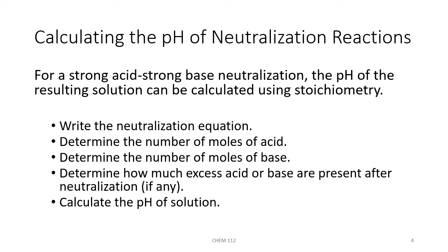In the previous examples, when deciding if the pH after neutralization would be acidic, basic, or neutral, we assumed equal molar amounts of acid and base, so we only had to look at the salt formed. If we don't have equal molar amounts, we can use stoichiometry and the balanced equation to figure out what's left over after neutralization. We write the neutralization equation, determine moles of acid and base reacting, find any excess, and then calculate pH.